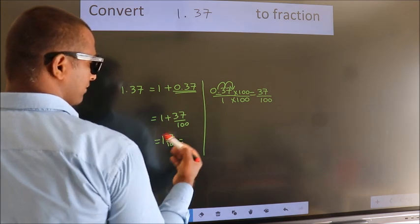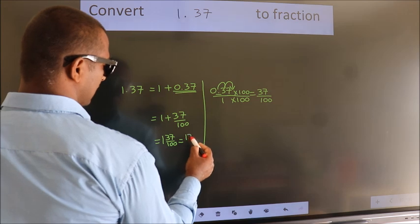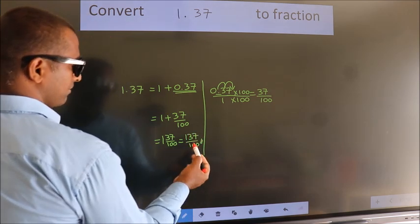In improper fraction it is 1 into 100, 100 plus 37. 137 by 100 is our fraction.